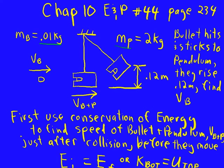We want to work our way backwards to find out how fast the bullet was going before it hits. First we want to use conservation of energy to figure out the speed of the bullet and the pendulum just after the collision, but before they started to move. We assume the collision occurred instantaneously.